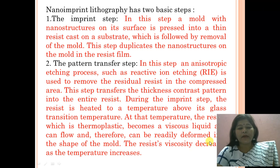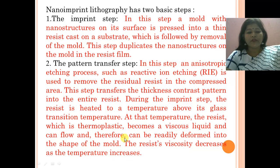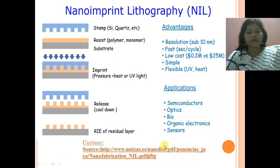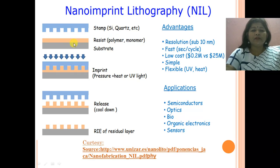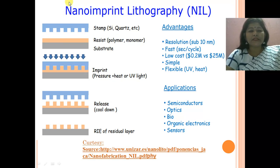During the imprint step, the resist is heated to a temperature above its glass transition temperature. At this temperature the resist, which is thermoplastic, becomes a viscous liquid and can flow, and therefore can be readily deformed into the shape of the mold. The resist viscosity decreases as the temperature increases.